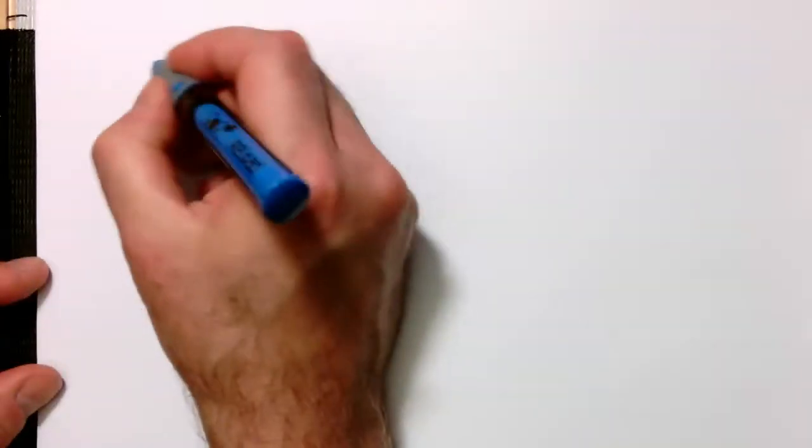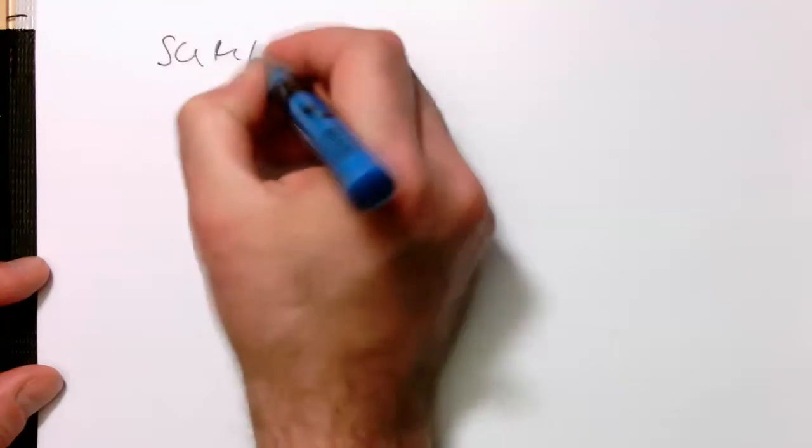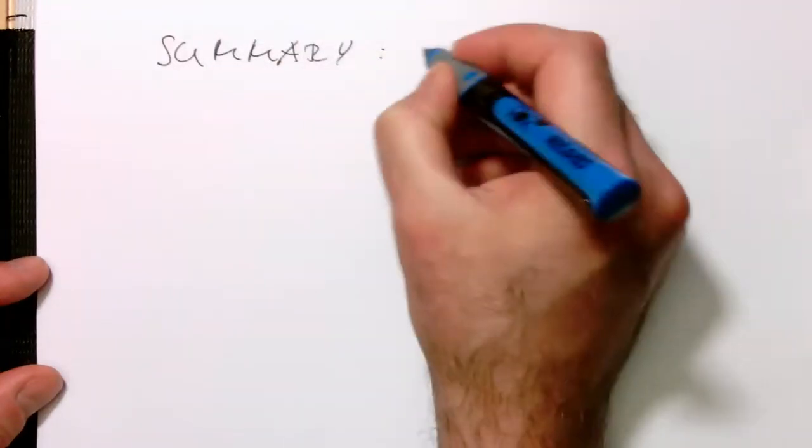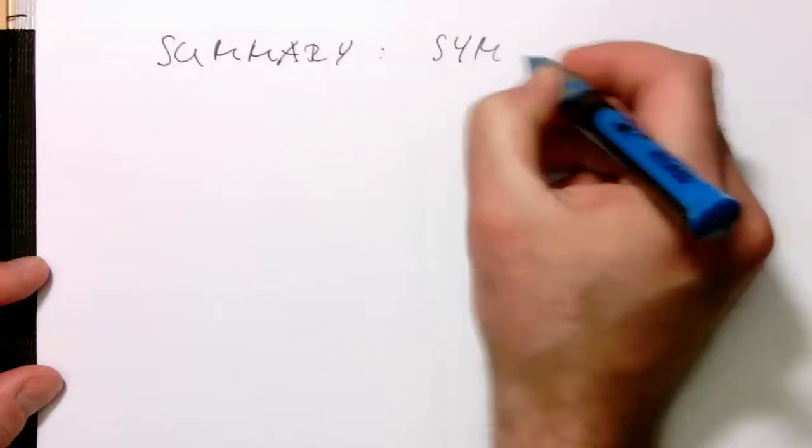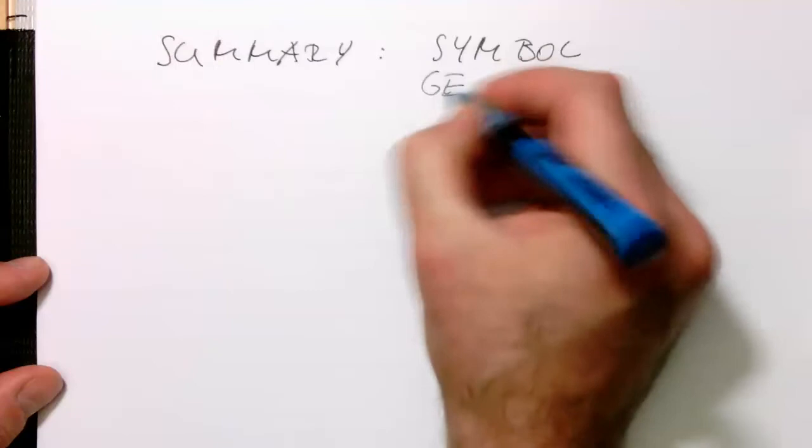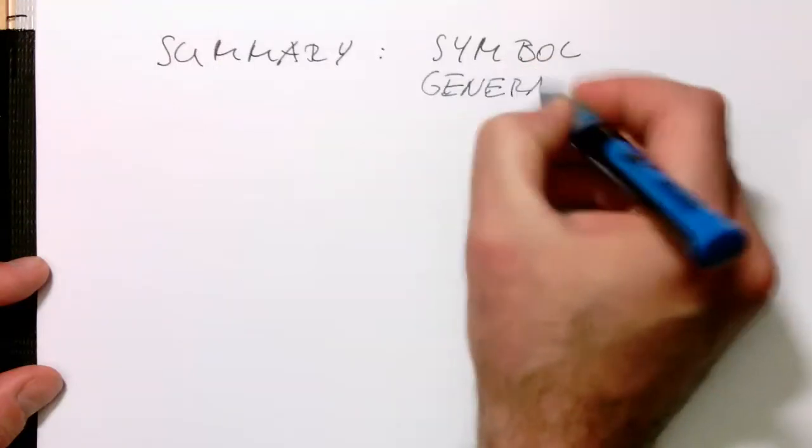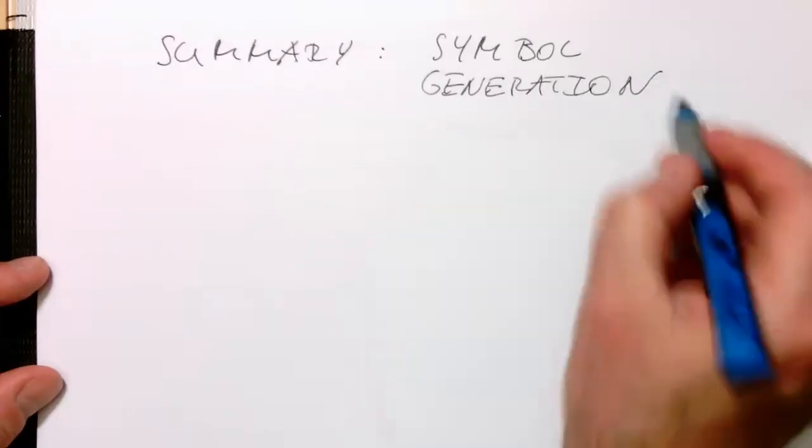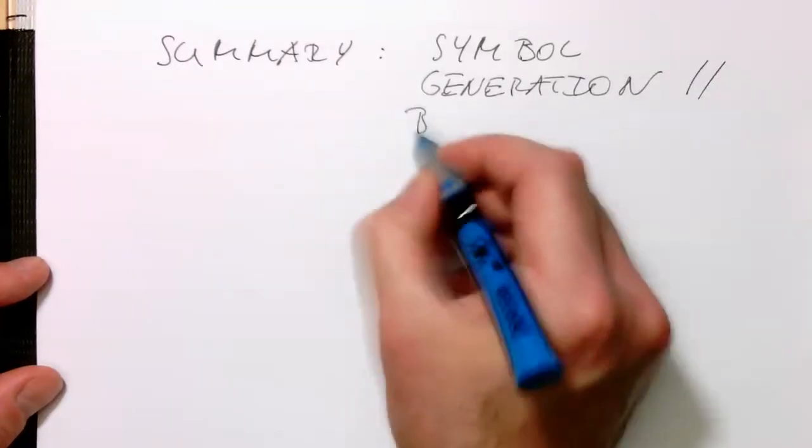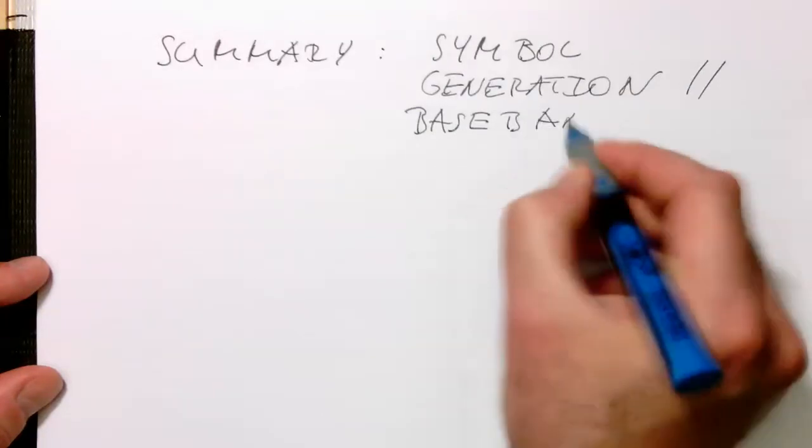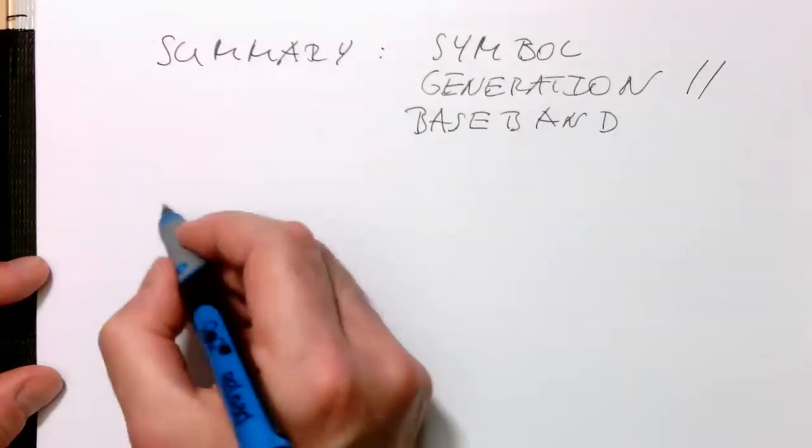So, summary of our symbol generation, or I could also say of the baseband. We need to do two things.